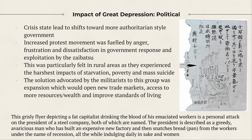A striking poster depicts a fat capitalist drinking the blood of powerless workers — a personal attack on the president of a steel company. The president is described as a greedy man who built an expensive new factory and then snatched bread from workers in the name of recession, while indulging in sake and women. This reflects the widespread belief that political parties had abandoned the people and given in to the zaibatsu, driving the exploitation that characterized the Great Depression period.